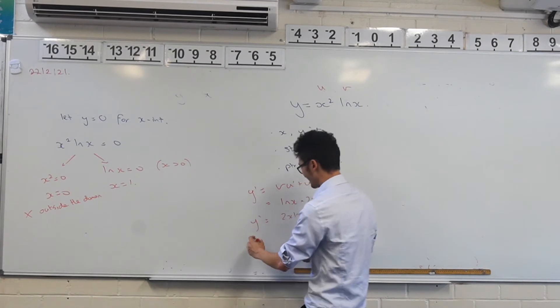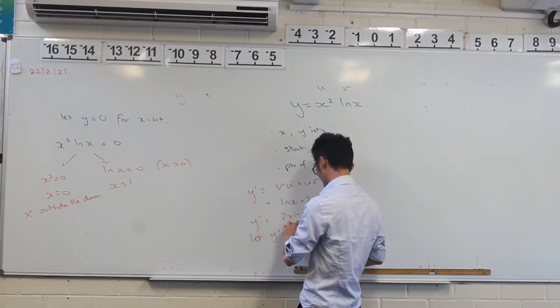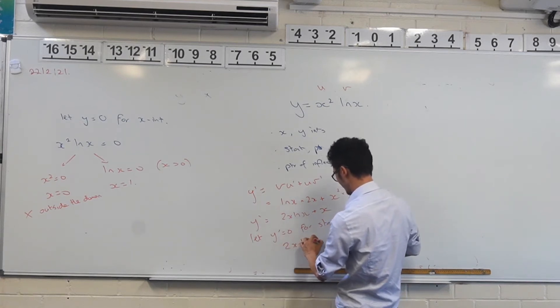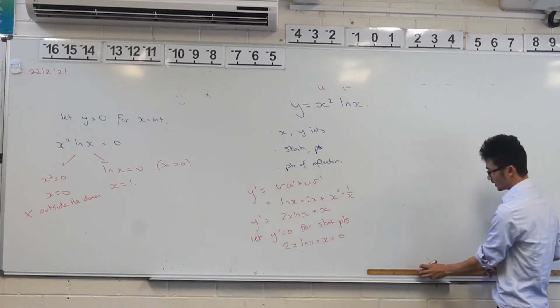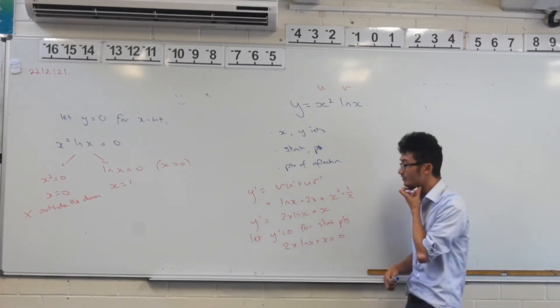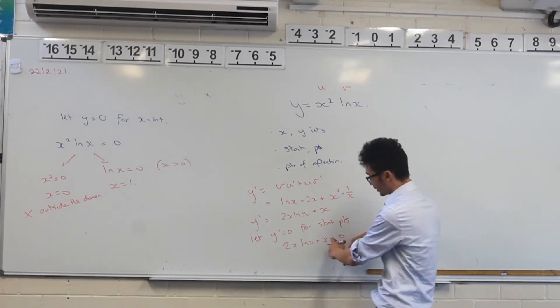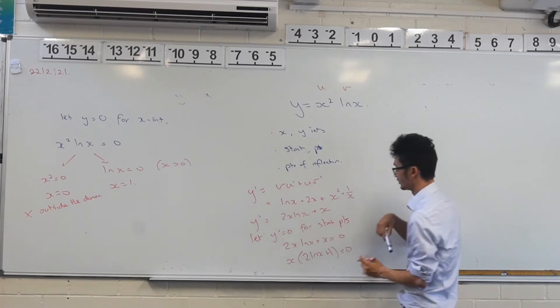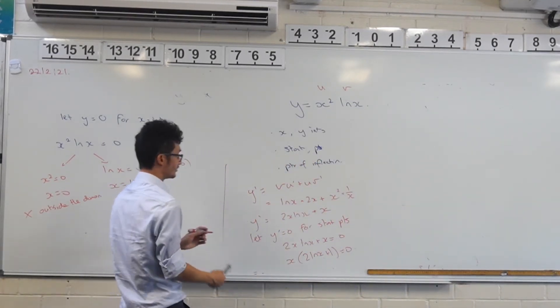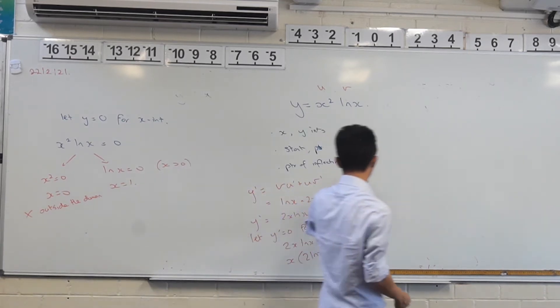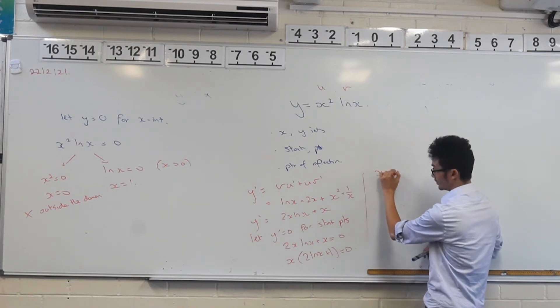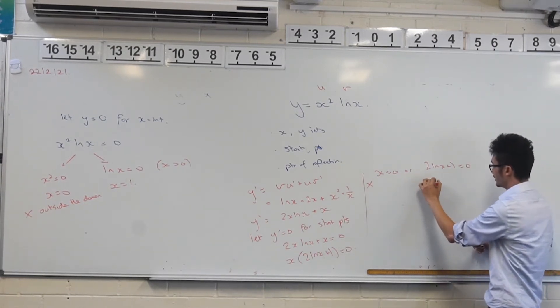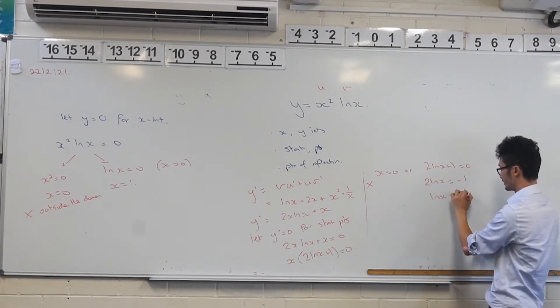And let y dash equal to zero for stationary points. So we've got 2x ln of x plus x equals to zero. And again, same thing here. Whenever you are trying to solve for these variables equals zero, never divide by variables, because you actually lose solutions there. But factorize. So x times 2 ln of x plus one equals to zero.